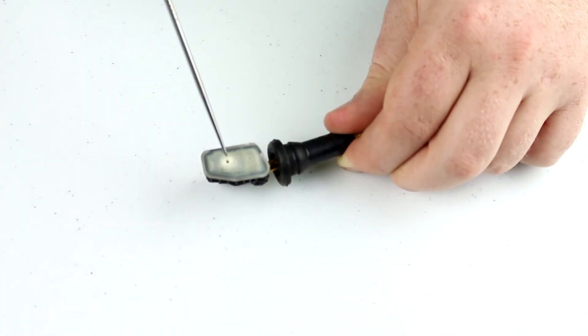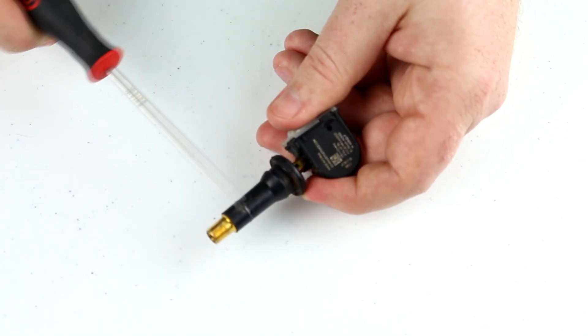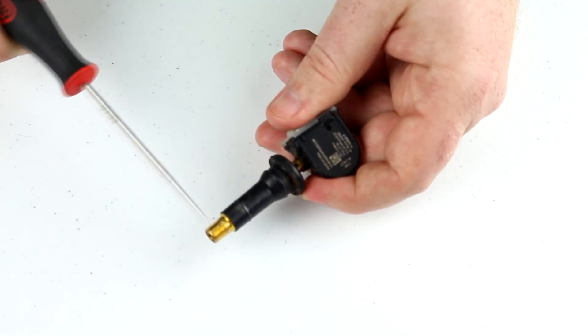This hole right here is where it actually encounters the air from inside the tire and that's where it senses the pressure. This is the portion that sticks out of the rim and this is where your valve cap goes on. Let's remove that portion first.